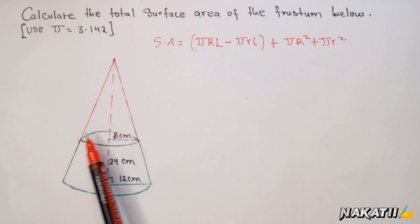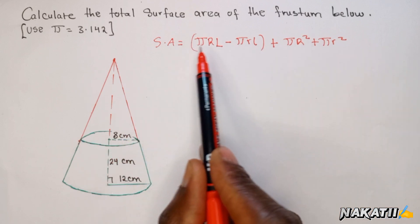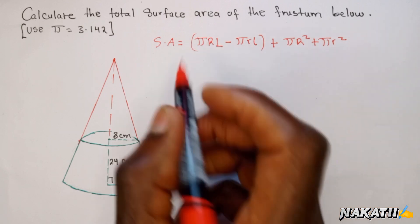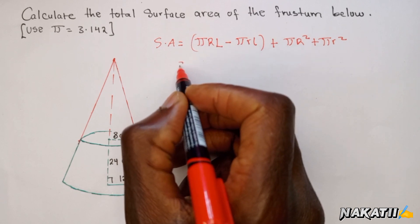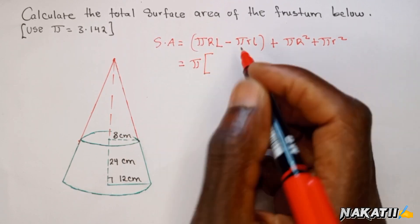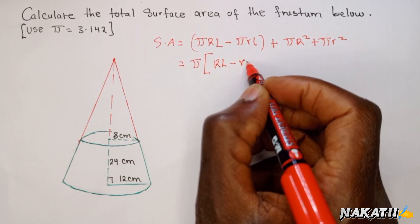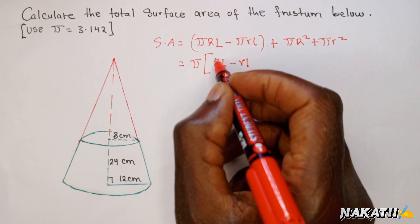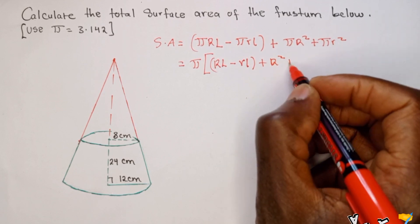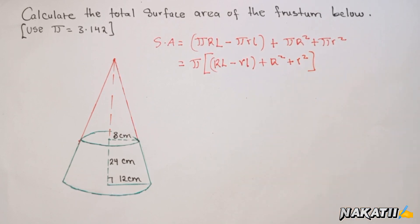This one here is the area of the small circle, the circular top which is the smaller circle. This formula can be simplified — pi is common, so you can factor it out and say: surface area = pi times (R·L minus r·l plus R² plus r²). That is how that formula can be simplified.